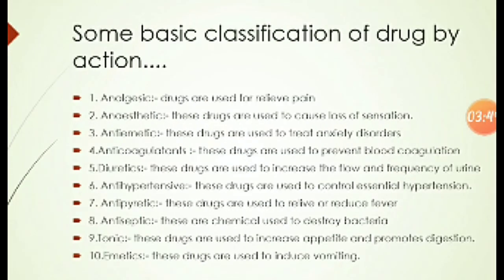Now we will learn about the basic classification of drugs by their action. First, analgesics are drugs used for relief of pain. Second, anesthetics are drugs used to cause loss of sensation. Third, anti-anxiety drugs are used to treat anxiety disorders. Next, anticoagulants are drugs used to prevent blood coagulation. Next, diuretics are drugs used to increase the flow and frequency of urine.